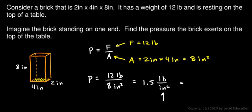We could, instead of writing pounds per square inch right there, we could write 1.5 psi. And psi is just an abbreviation. Pounds per square inch.